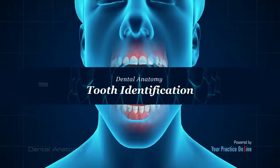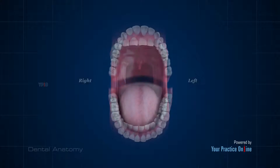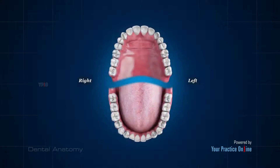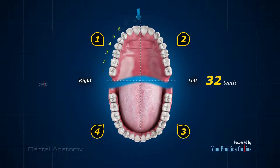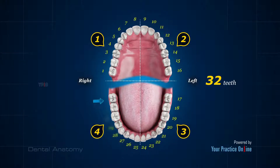Tooth Identification: The jaws are divided into four quadrants to help identify the teeth. There are 32 teeth in the adult mouth. They are commonly numbered starting from the last molar of the upper right quadrant and ending at the last molar of the lower right quadrant.